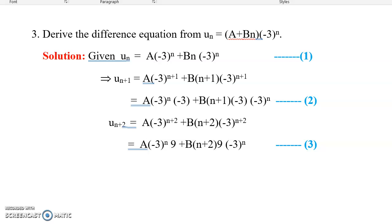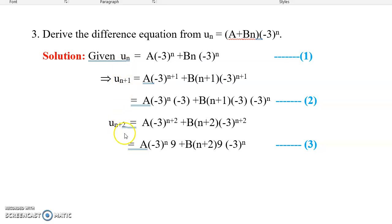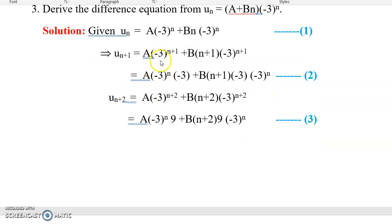Now one more problem: derive the difference equation from un = a + b·n·(-3)^n. First split into two terms: a·(-3)^n + b·n·(-3)^n. Then find un+1 by replacing n with n+1. So un+1 = a·(-3)^(n+1) + b·(n+1)·(-3)^(n+1). Splitting: (-3)^(n+1) = (-3)^n · (-3), so un+1 = a·(-3)·(-3)^n + b·(-3)·(n+1)·(-3)^n.